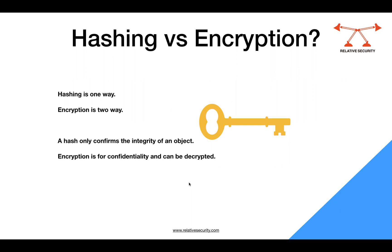However, in the case of encryption, when you have encrypted data you can still decrypt it and get the plain text back. Encryption is a process of converting plain text into cipher text, and that cipher text can be converted back into the original plain text using the same key with which it was encrypted.